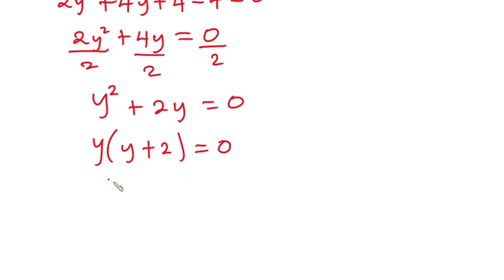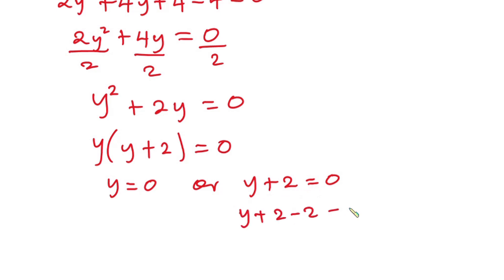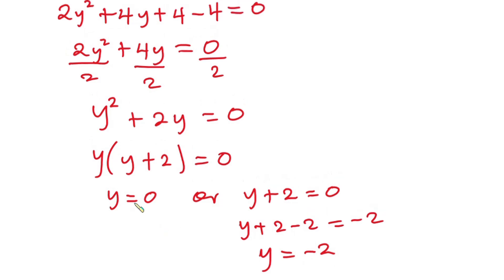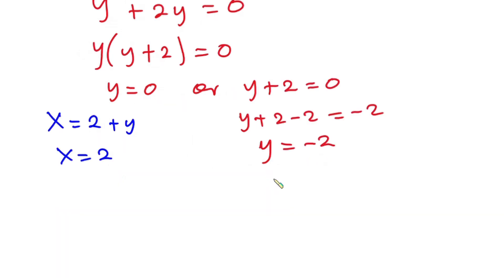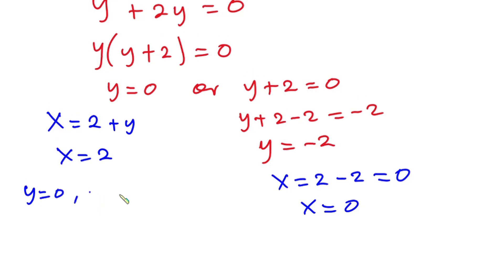So at this point, we can say that y is equal to 0 or y plus 2 is equal to 0. From that equation, y equals negative 2. So now we know y equals 0 and y equals negative 2. When y is 0, from x equals 2 plus y, we have x equals 2. When y equals negative 2, we have x equals 2 minus 2, so x equals 0.